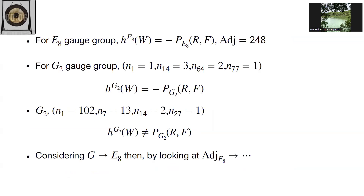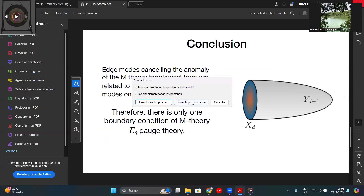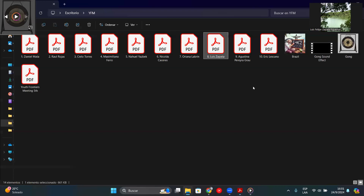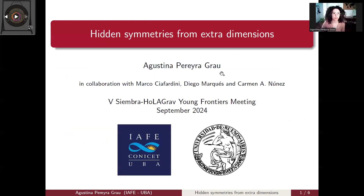Besides the known solutions, we found a new solution related to Chamseddine-Witten with matter and a third generation, plus other exceptional algebra solutions. The main point is that all solutions that factorize the anomaly polynomial come from E8 gauge theory via branching rules — all polynomials that factorize the way we want can be shown to come from E8 by branching rules.